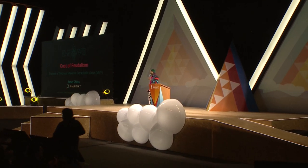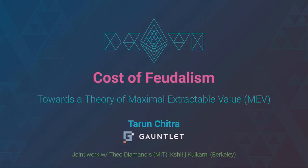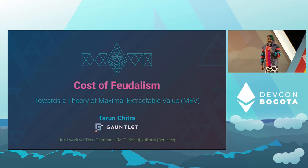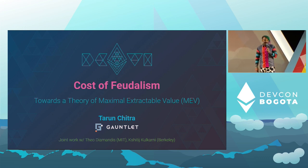I probably don't need to talk about what MEV is too much, given that there were 17 or 18 talks about MEV. But I think in the spirit of trying to understand the incentives hidden in a lot of these systems, one question you might ask is: does there exist some type of formal theory for MEV? Does there exist some type of mathematical structure to this thing that seems to captivate people's imaginations, yet no one can describe it? I like to call any analysis of MEV 'measuring the cost of feudalism' — that's where the title comes from.